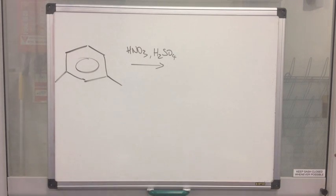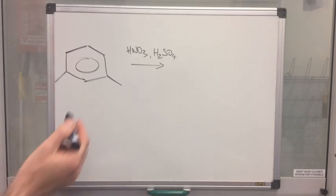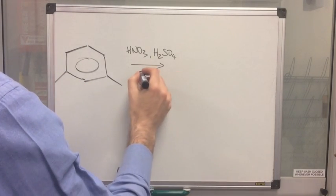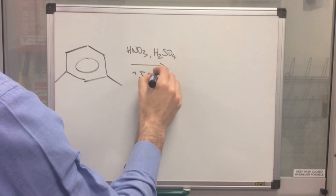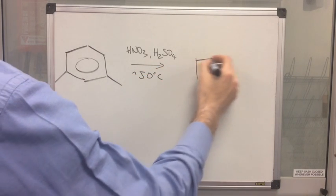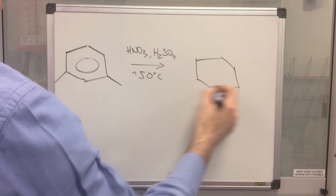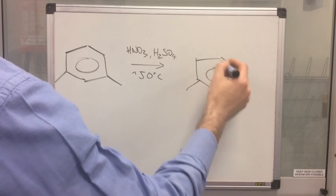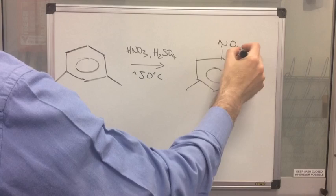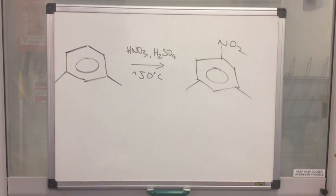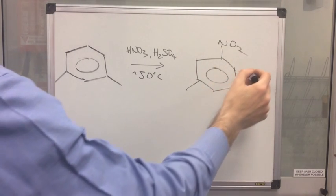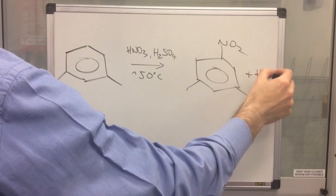So you just apply just what you've seen, and obviously the product is going to be, provided it's around about 50 degrees C, we are going to get mononitration occurring. So you can choose, let's put it up there, you're going to get that. And obviously the other product is a water molecule.